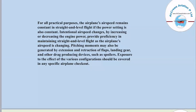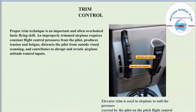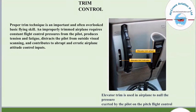To ease the control surfaces, we use trim control. Proper trim technique is an important and often overlooked basic flying skill. An improperly trimmed airplane requires constant flight control pressure from the pilot, produces tension and fatigue, and distracts the pilot from outside visual scanning, contributing to abrupt and erratic attitude control inputs. The elevator trim wheel and elevator trim indicator are used to null the pressure exerted by the pilot on the pitch flight control.